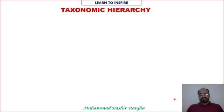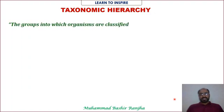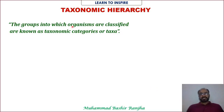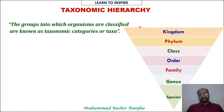The next topic is taxonomic hierarchy. Taxonomic hierarchy is the arrangement of organisms into groups and subgroups. These groups are called taxa (singular: taxon). The groups into which organisms are classified are known as taxonomic categories or taxa. The ladder-like arrangement of taxa is called taxonomic hierarchy — from kingdom, phylum, class, order, family, genus, down to species.